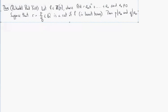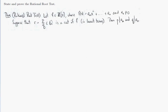State and prove the rational root test. The statement of the rational root test is that if f is a polynomial with integer coefficients and a non-zero constant term, and r = p/q is a root of f written in lowest terms, then the numerator p divides the constant term a₀, while the denominator q divides the leading coefficient aₙ.